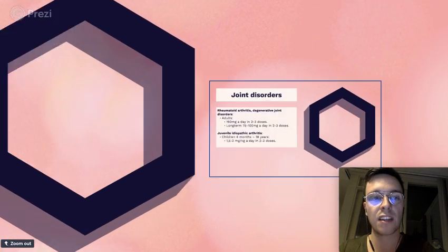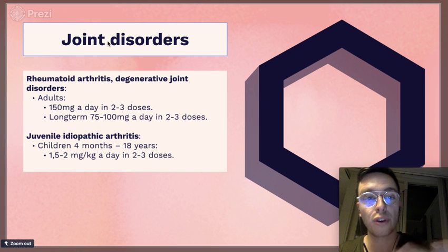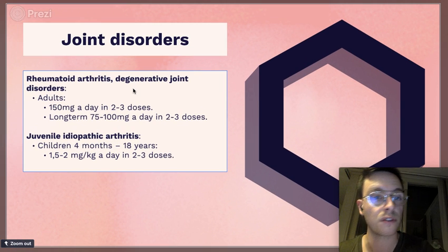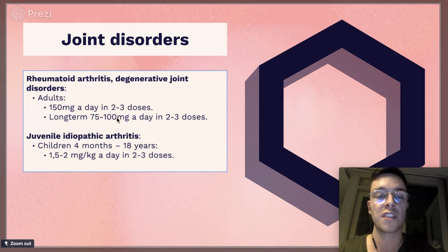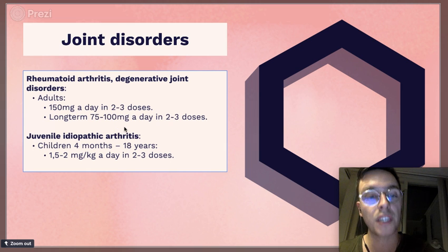If you're taking Diclofenac on a prescription for joint disorders like arthrosis or arthritis, you can use 150 milligrams a day divided over two to three doses. For long-term use it's a bit lower, it's 75 to 100 milligrams a day in two to three doses.